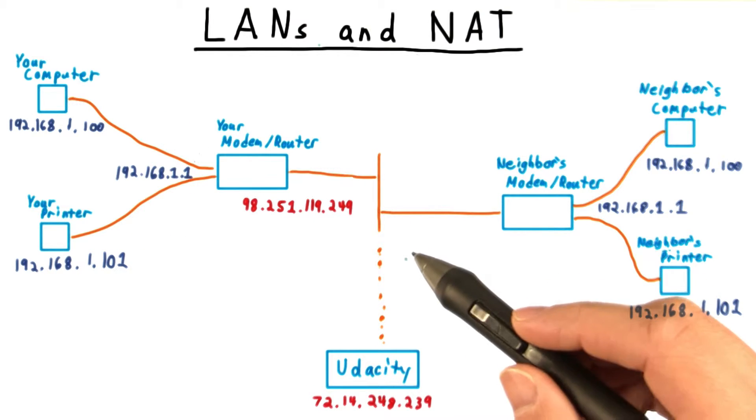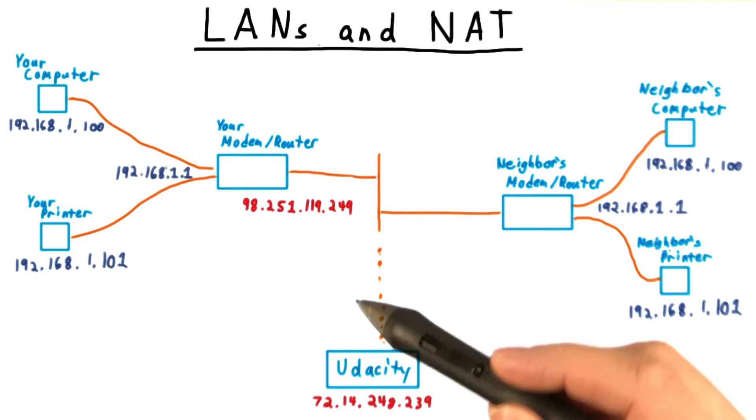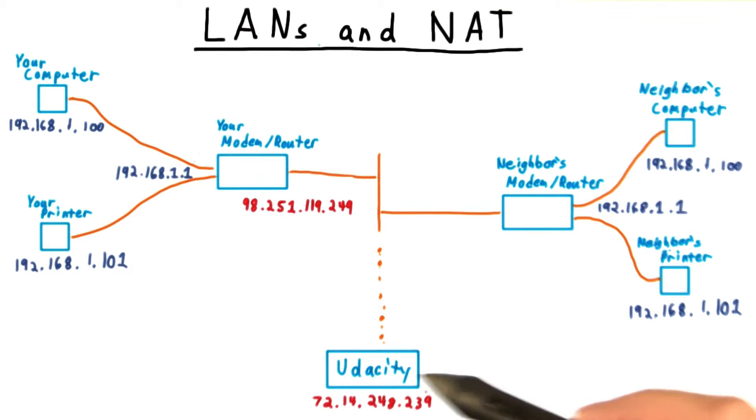Of course, you want to be able to do more than just connect to other things around the house. You want to be able to connect to cool websites like Udacity. Let's connect your modem to the internet, and give it the IP 98.251.119.249.